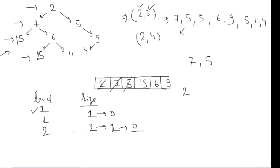Now size is zero, so I'm done with level two and I increment the level to three. The queue size is now three, meaning level three has three elements: fifteen, six, and nine. I remove fifteen, check permissible level — yes — print fifteen, reduce size by one. Fifteen has no left or right children, so I do nothing. Then I remove six, check permissible level — yes — and reduce size.